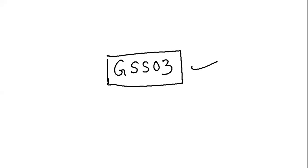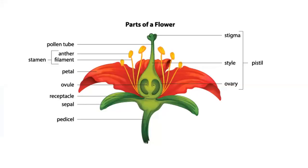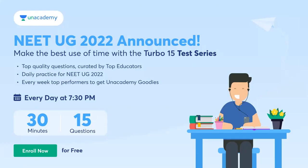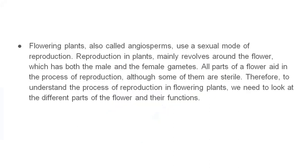Now let's go back and discuss floral parts. Flowering plants are called angiosperms. Angiosperms occupy the highest level of evolution among plants — just like humans are at the top among animals. Their sexual mode of reproduction makes them very special. This sexual mode of reproduction gives us better plants and new variants.